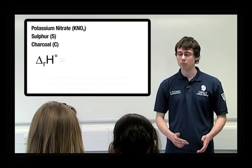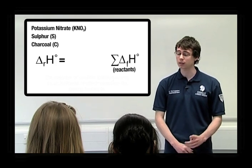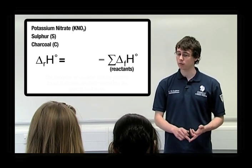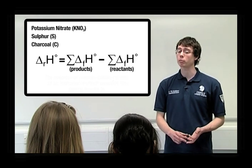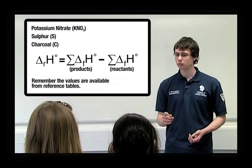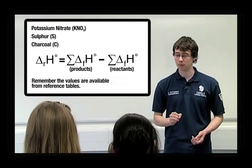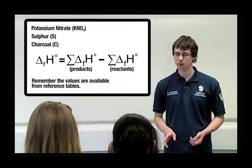We can work out the standard enthalpy of reaction, or delta RH, by taking the sum of the standard enthalpy of formation of the reactants and taking that away from the sum of the standard enthalpy of formation of the products. But, can you remember where we get these values from? Reference tables and published data. Correct. But remember, only compounds have these values, not the elements.